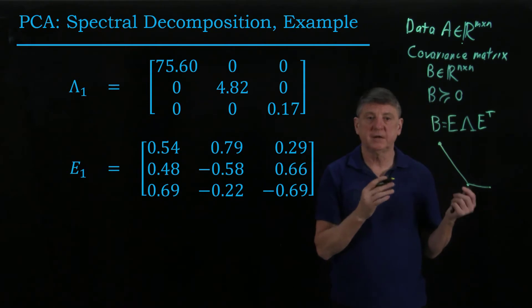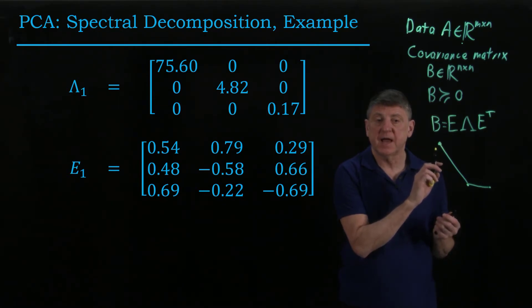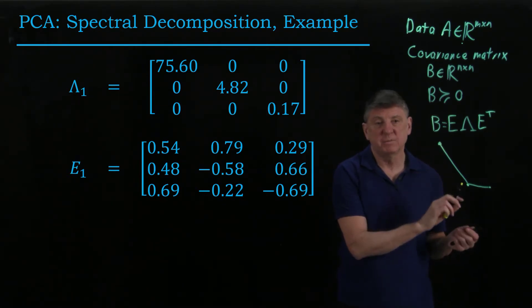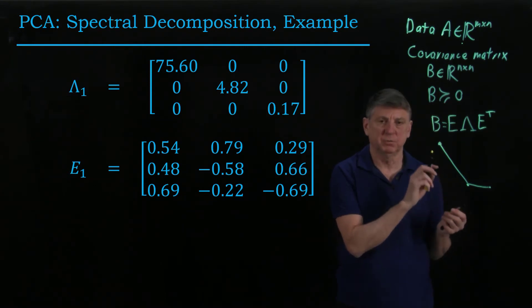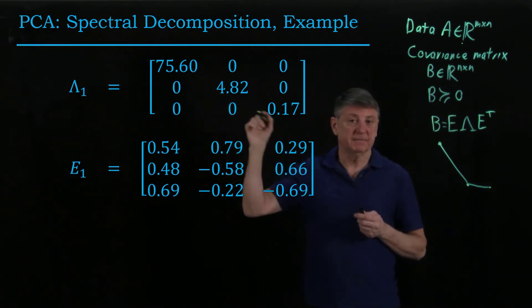That scree plot would tell me that probably we only need to use one principal component in representing this matrix and representing this data, and we might need to go possibly to 2. But I would think that immediately all we need is 1. So that's what we get out of the eigenvalue matrix.